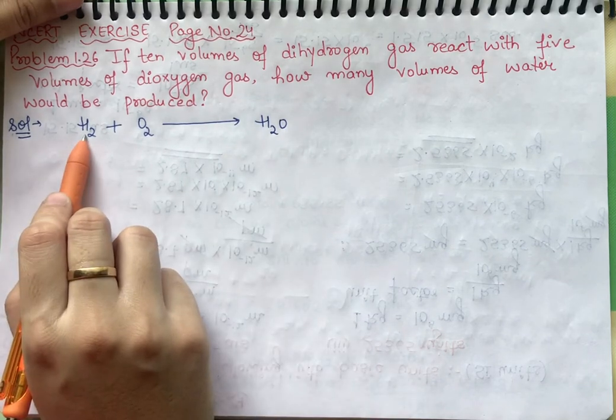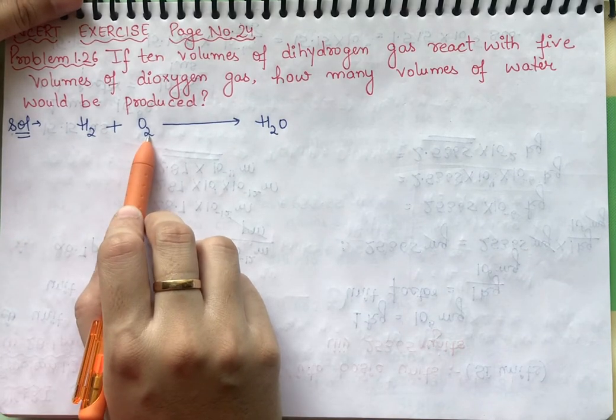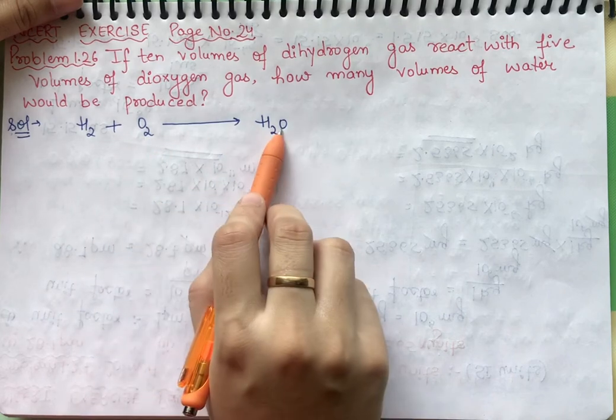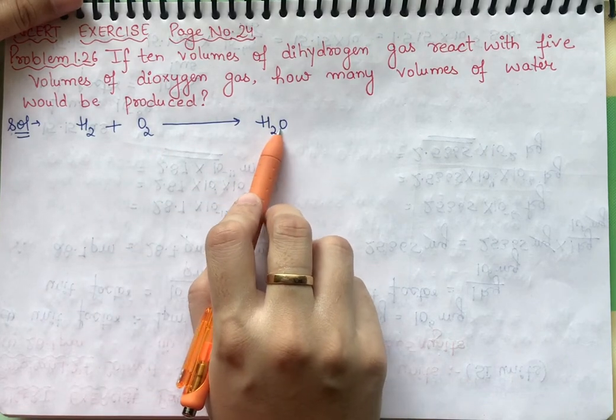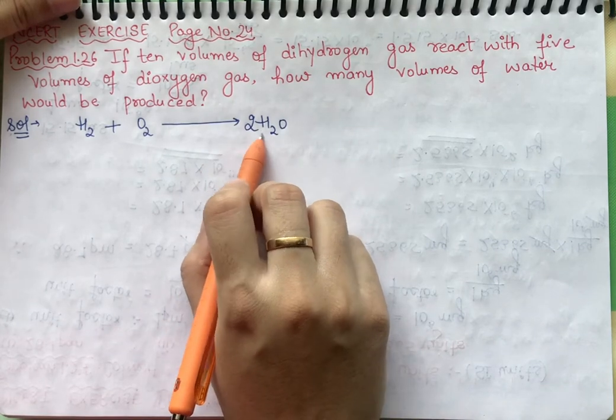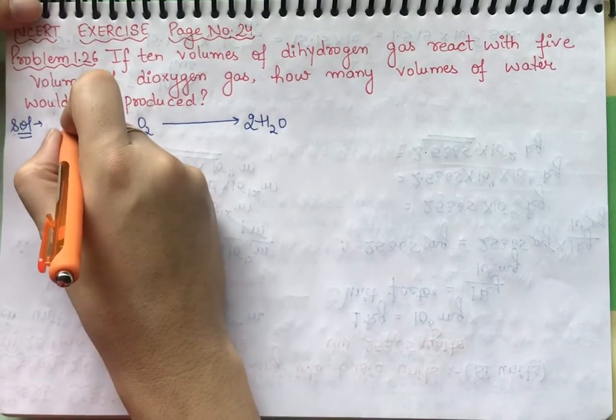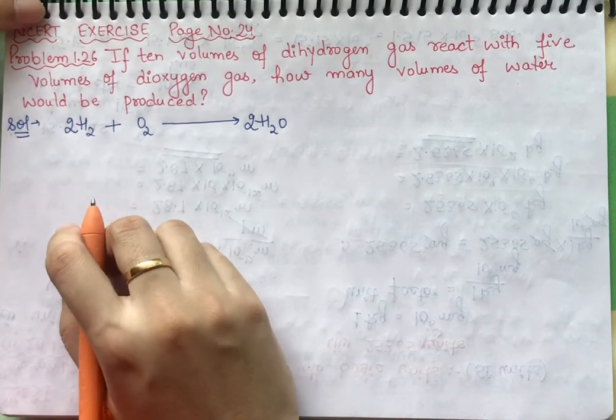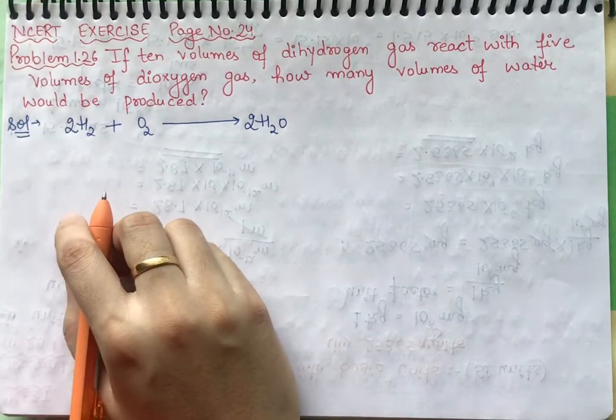Now let's balance. Here we have two molecules, two atoms of hydrogen, and here we have two atoms of water, but here we have two atoms of oxygen and here one atom. First we will balance this two. Now we have four hydrogen here, two hydrogen there, so if I put 2 here then definitely my equation will be balanced.